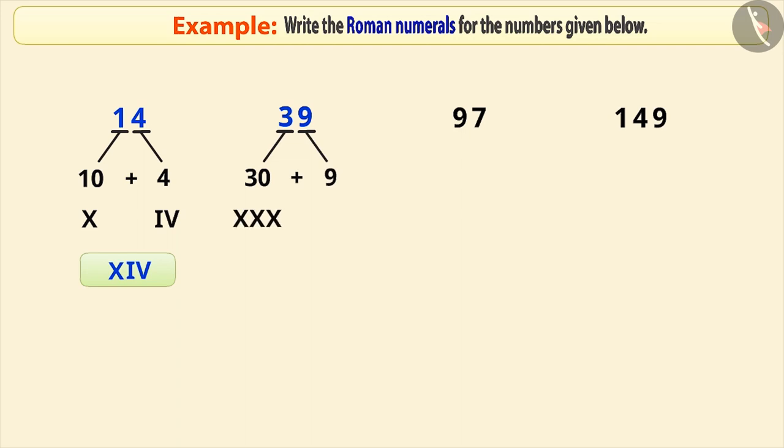We write 30 by repeating the symbol of 10 three times and we write 9 by putting the symbol of 1 to the left of the symbol of 10. Then, we write them together.